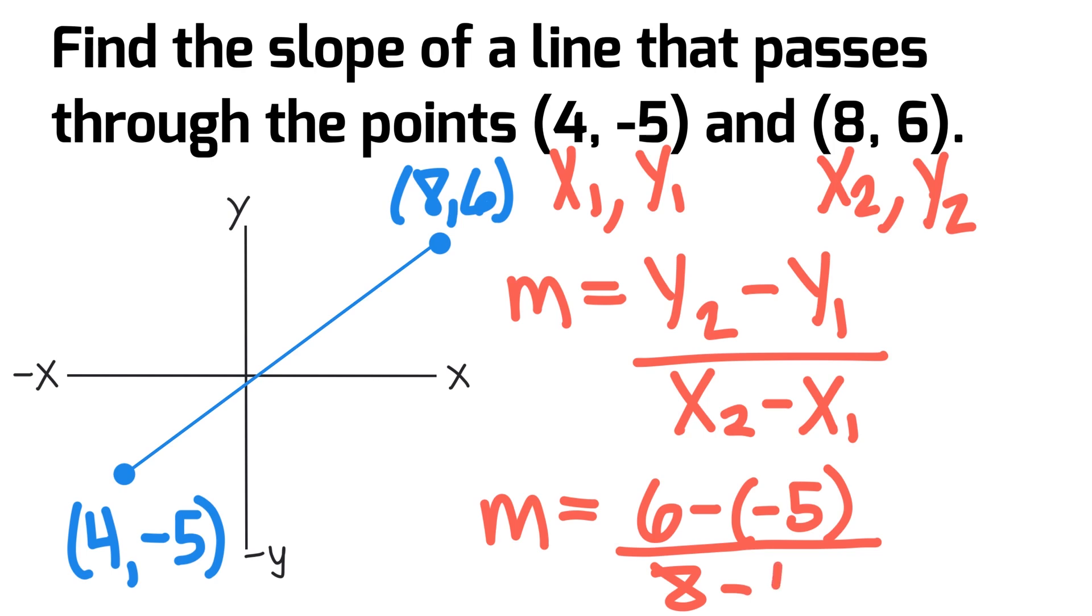8 minus 4. We simplify the top to be 6 plus 5, essentially, and that equals 11, all divided by 8 minus 4 is 4.